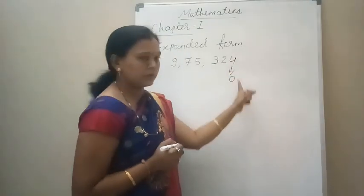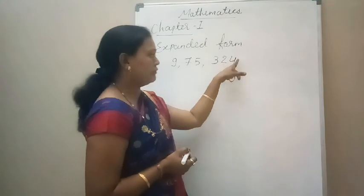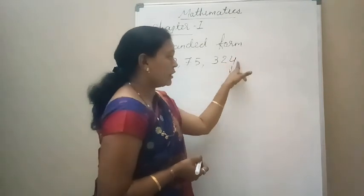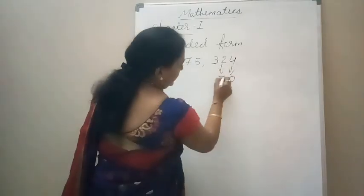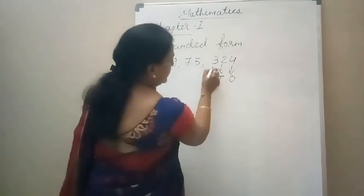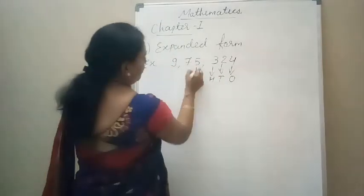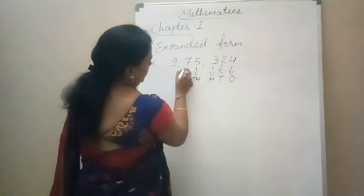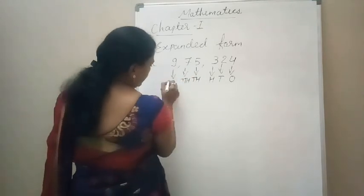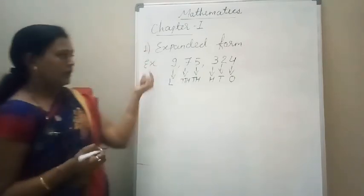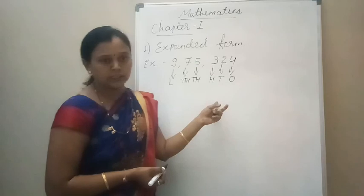When we identify the place of the number, start from the right. The first digit is 4, and 4 is at the ones place. Then, 2 is at tens. 3 is at hundreds. 5 is at thousands. 7 is at ten-thousands. And 9 is at lakhs. So, we identify the places of each digit.